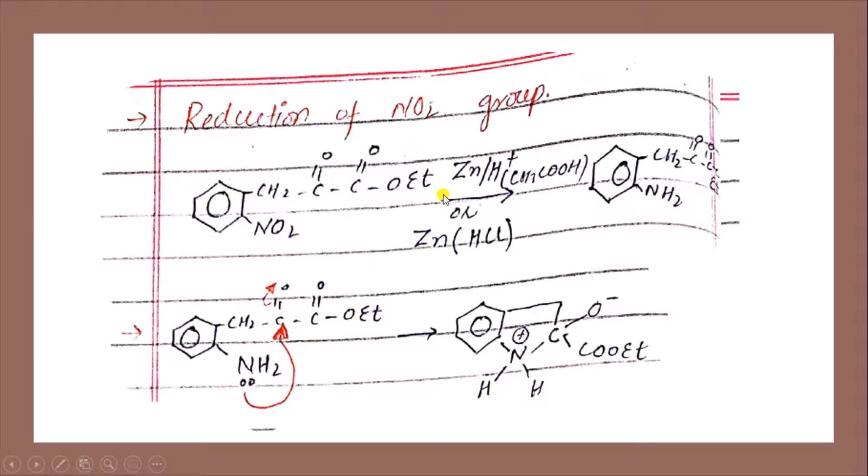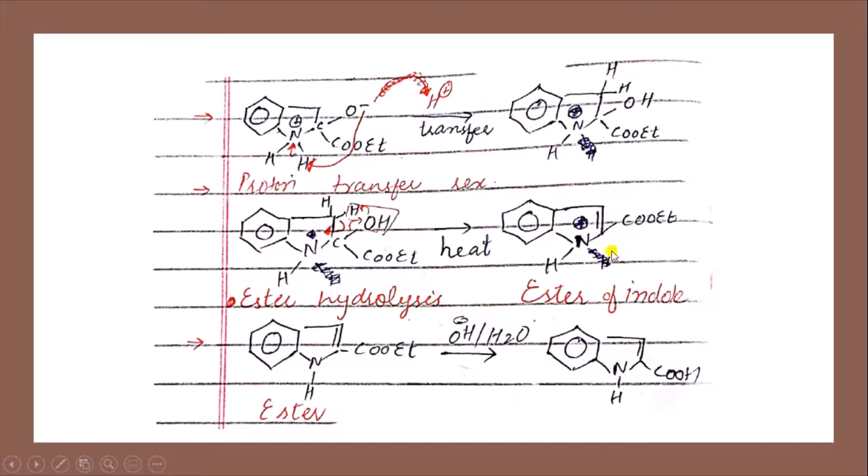Now we have NH2, and NH2 has a lone pair. This lone pair will attack on this carbon, and this electron will transfer to oxygen. In the next step, we will have O negative. This negative charge will attack on this hydrogen, and this hydrogen will transfer its proton to nitrogen.